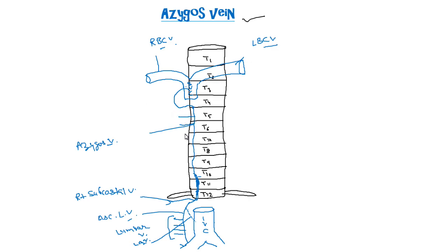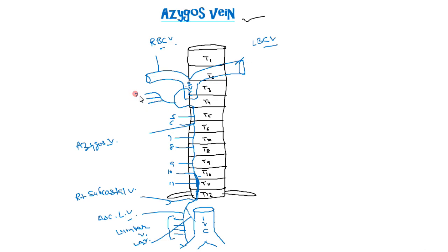The azygous vein will receive the posterior intercostal veins at T5, 6, 7, 8, 9, 10, and 11. These are the posterior intercostal veins. The second, third, and fourth intercostal veins join to form the superior intercostal vein, turning into the arch of the azygous vein. The first intercostal vein will directly drain into the right brachiocephalic vein.